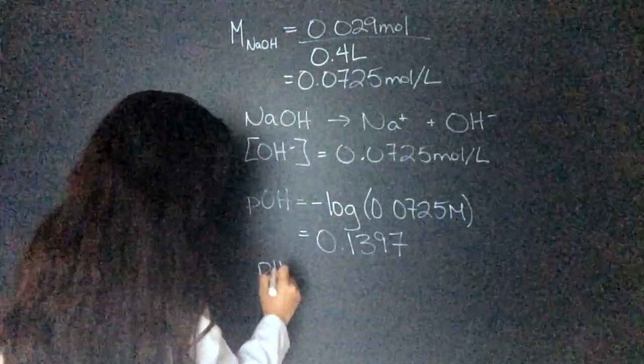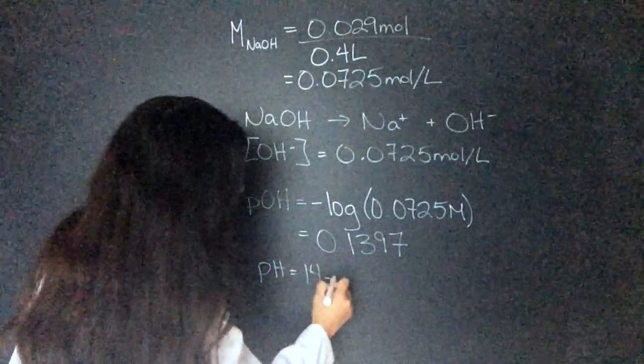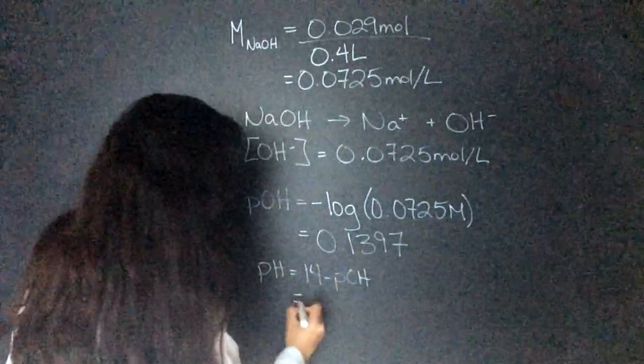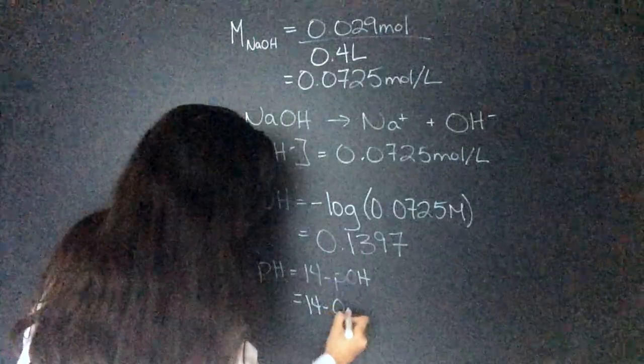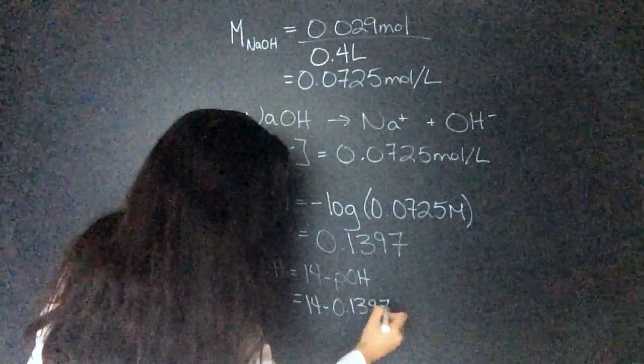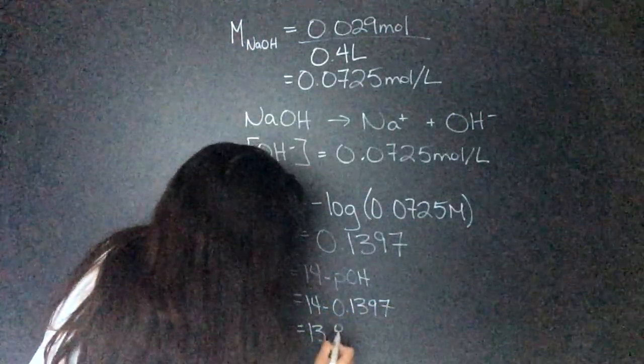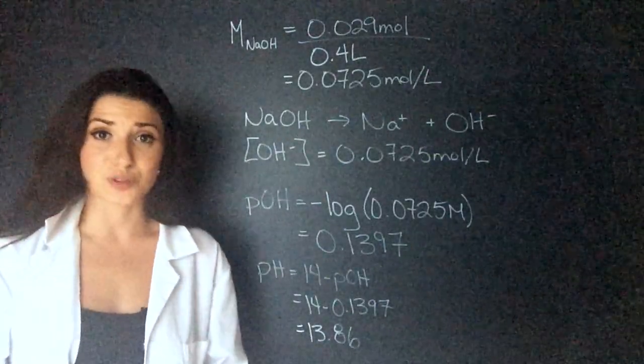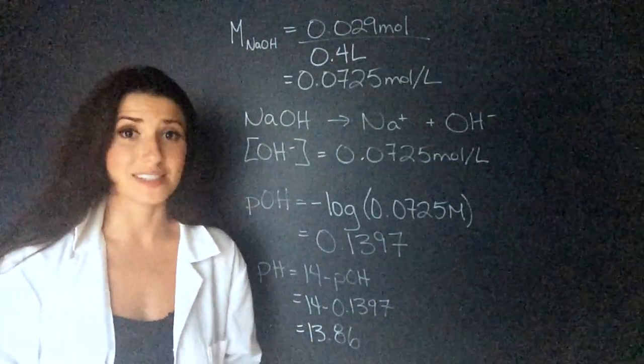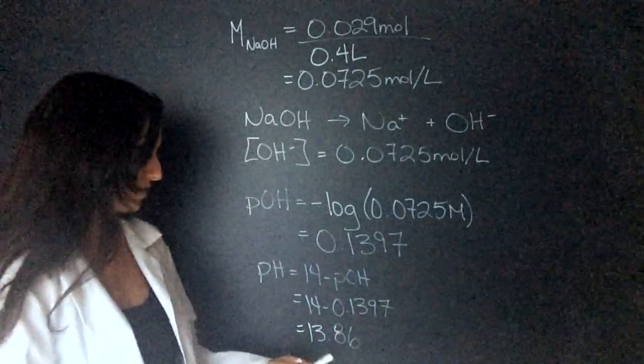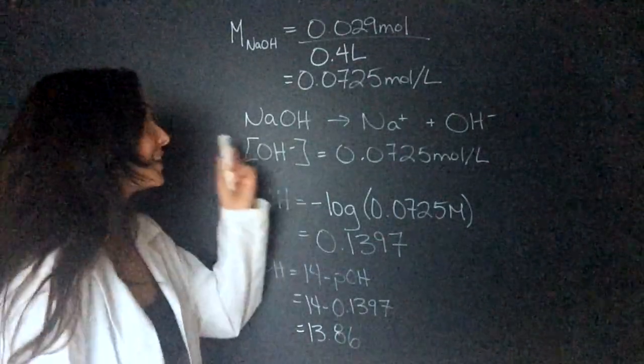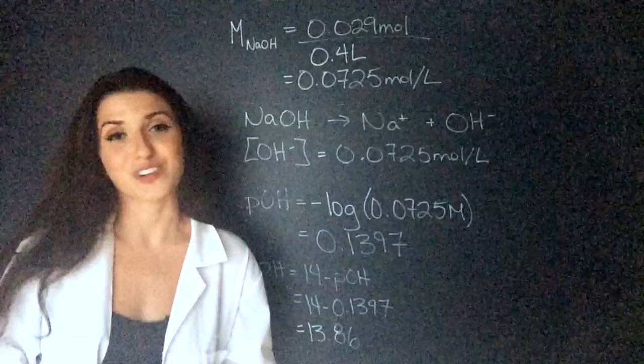Which is going to equal 14 minus the POH, which equals 14 minus 0.1397 gives us 13.86. You'll start to see a trend that those strong acids and bases do not mess around. This is a very basic solution. And sodium hydroxide, one of the strongest.